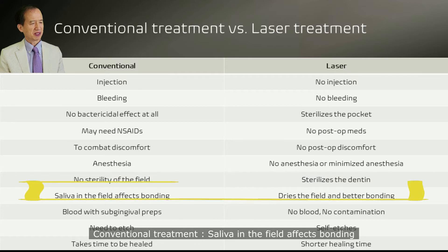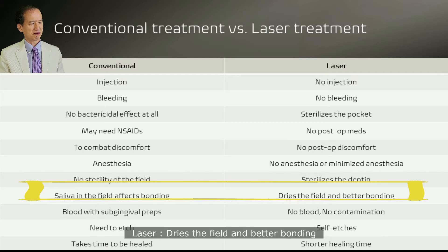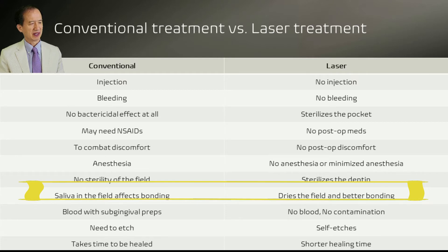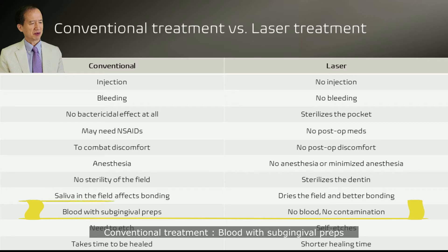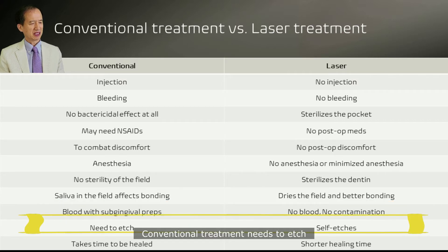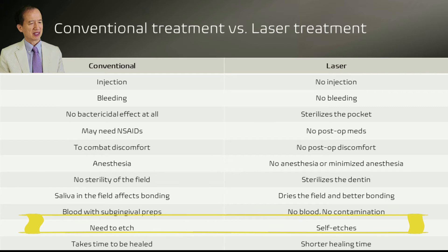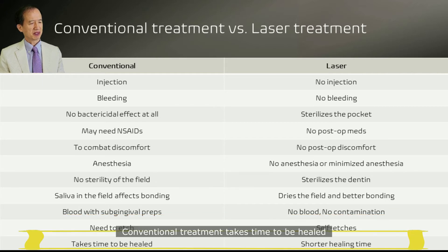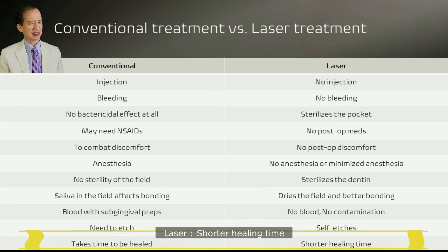Conventional treatment: saliva in the field affects bonding; laser dries the field for better bonding. Conventional treatment: blood with subgingival preps; laser means no blood, no contamination. Conventional treatment needs sutures; laser is self-suturing. Conventional treatment takes time to heal; laser means short healing time.